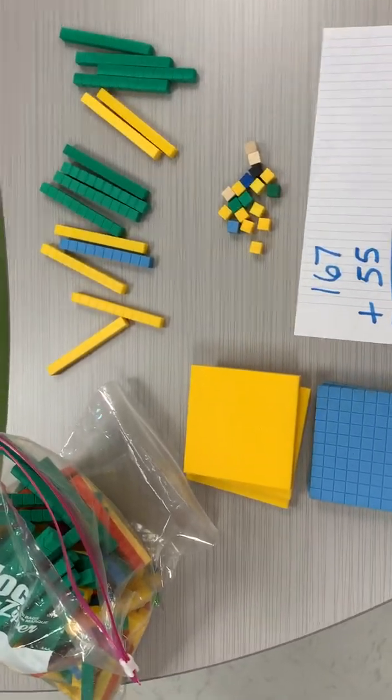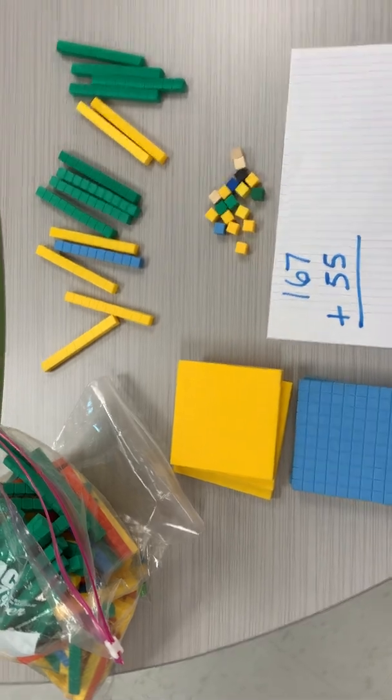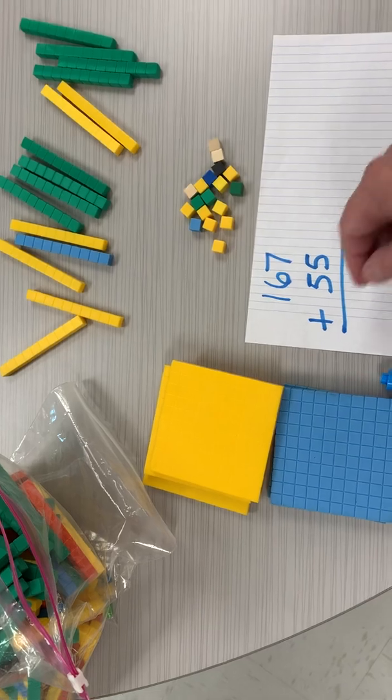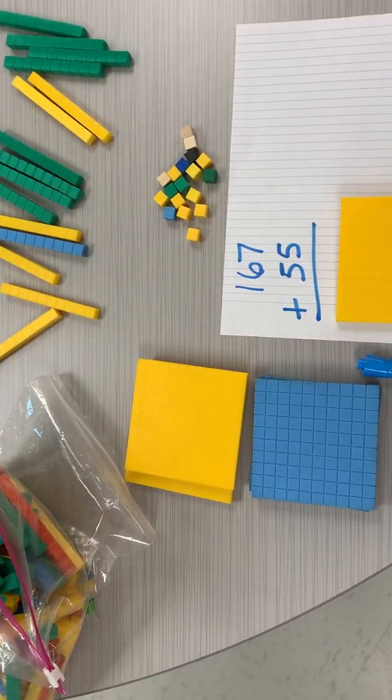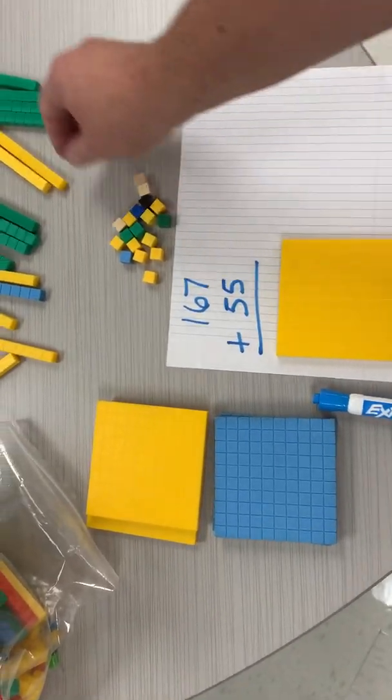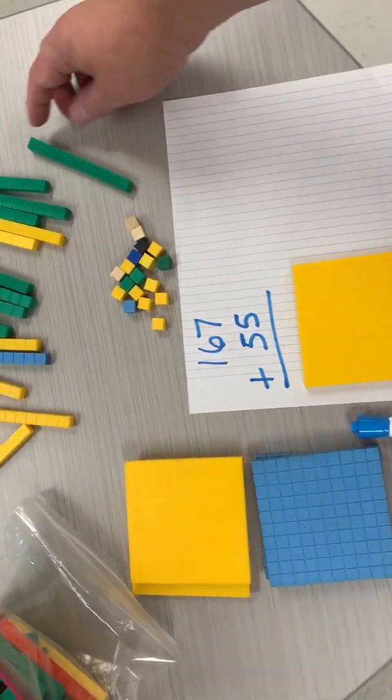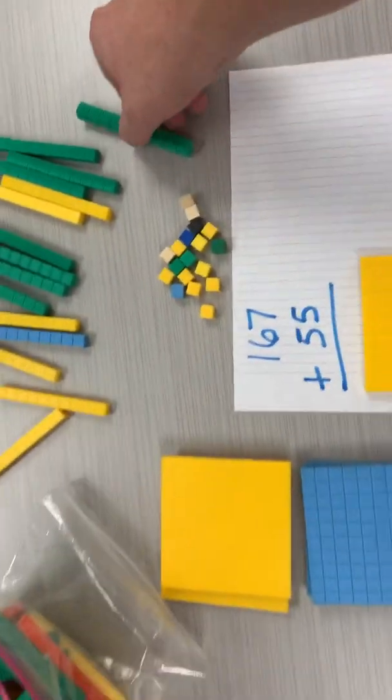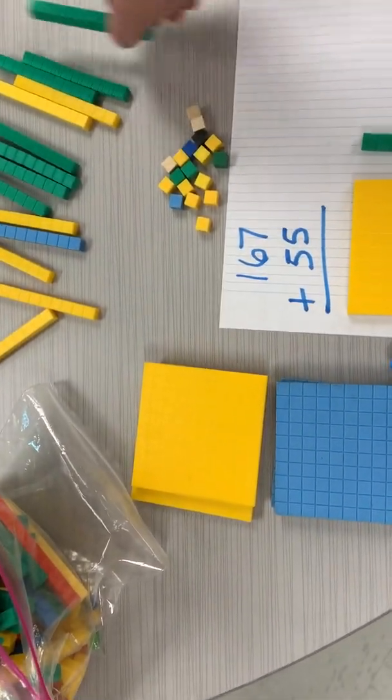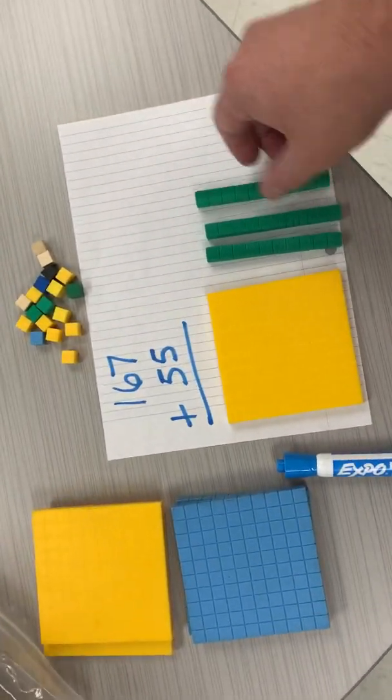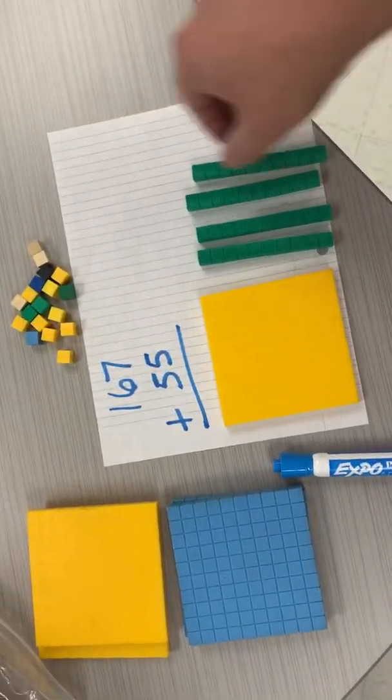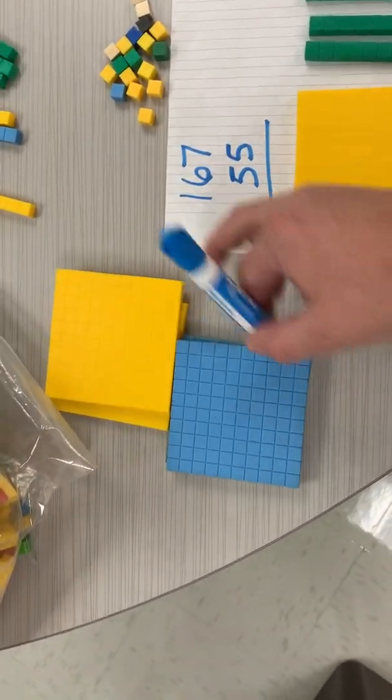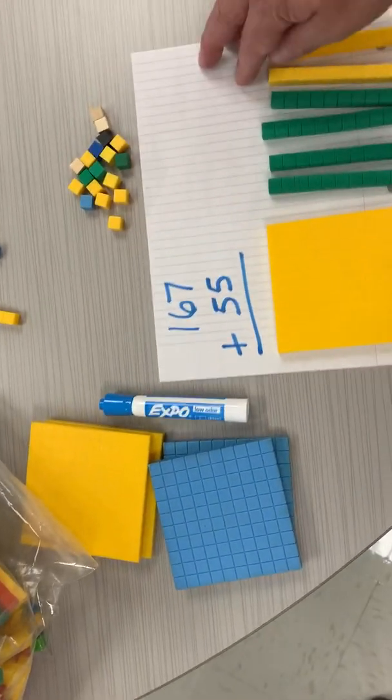All right, so first we're gonna make this top number here, 167. So I'm gonna start with the hundreds place. I'm gonna take 100. I'm gonna take six of these because these are tens. There's 10 of them in there if you can see. So 10, 20, 30, 40, 50, 60.